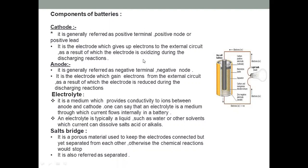For the cathode, electrons flow through external circuits. The cathode receives electrons from the external circuit. The electrode is reduced during the discharge reaction. We call it the cathode.